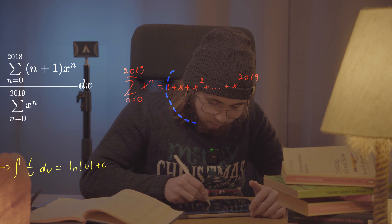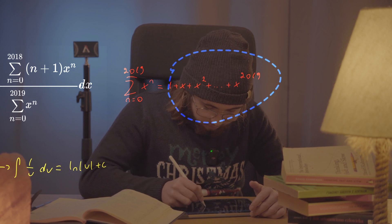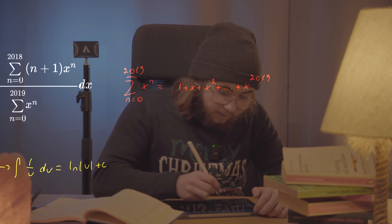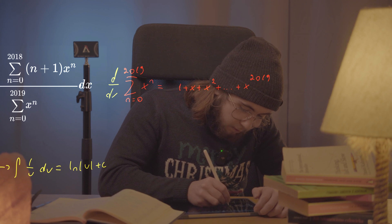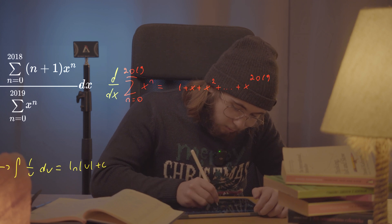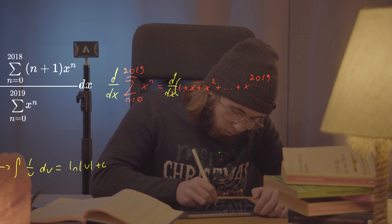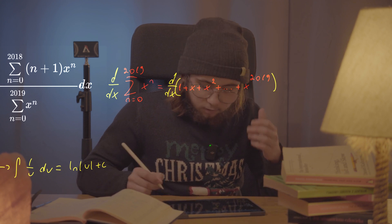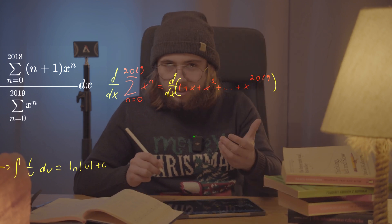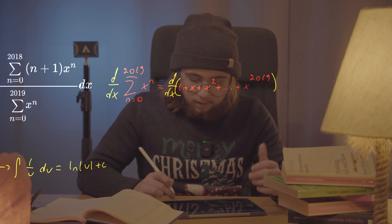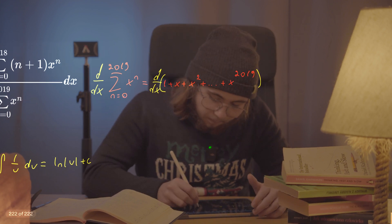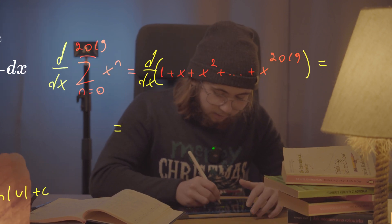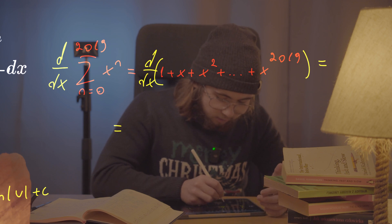If I move this stuff a little bit to the right and then differentiate both sides of this equation with respect to x, what will I get? First of all, the derivative of 1 is just going to be zero.